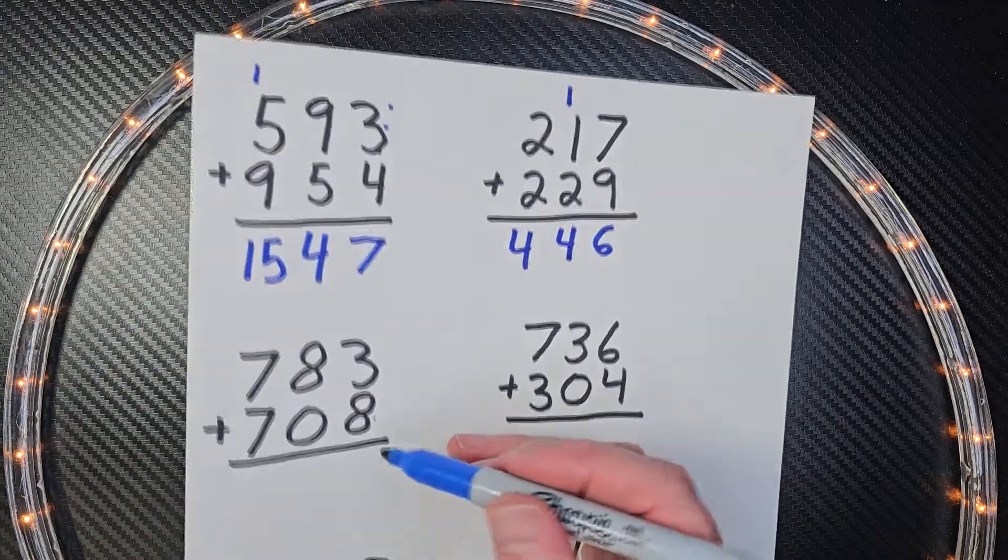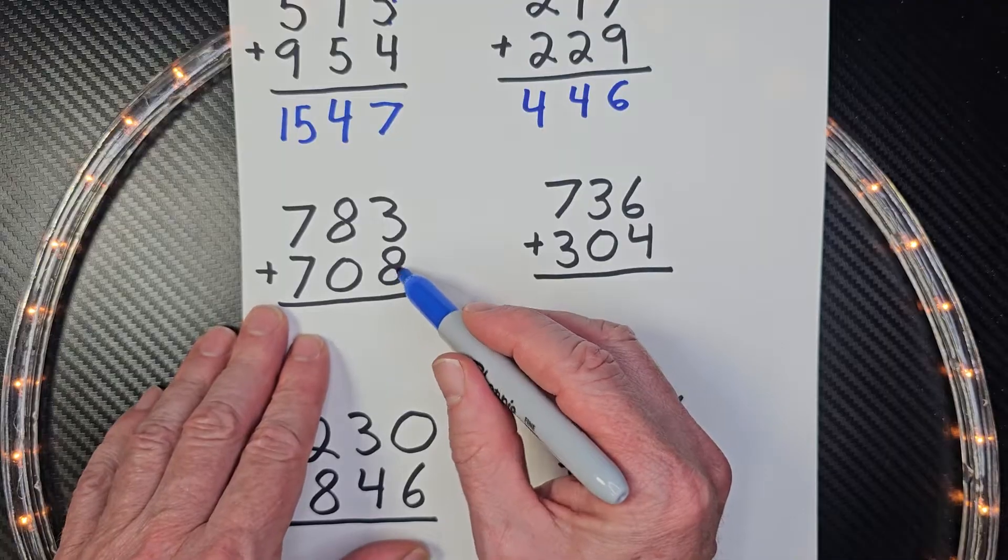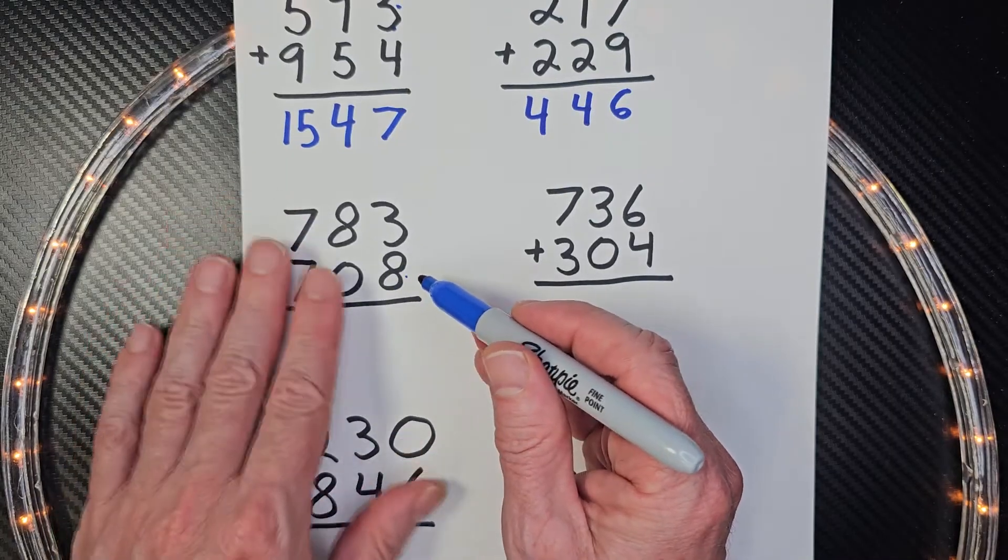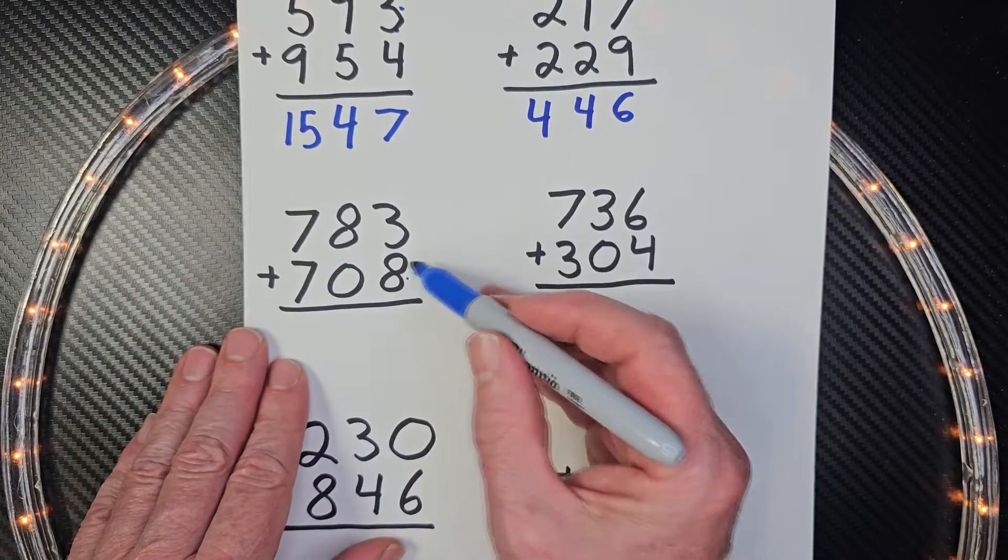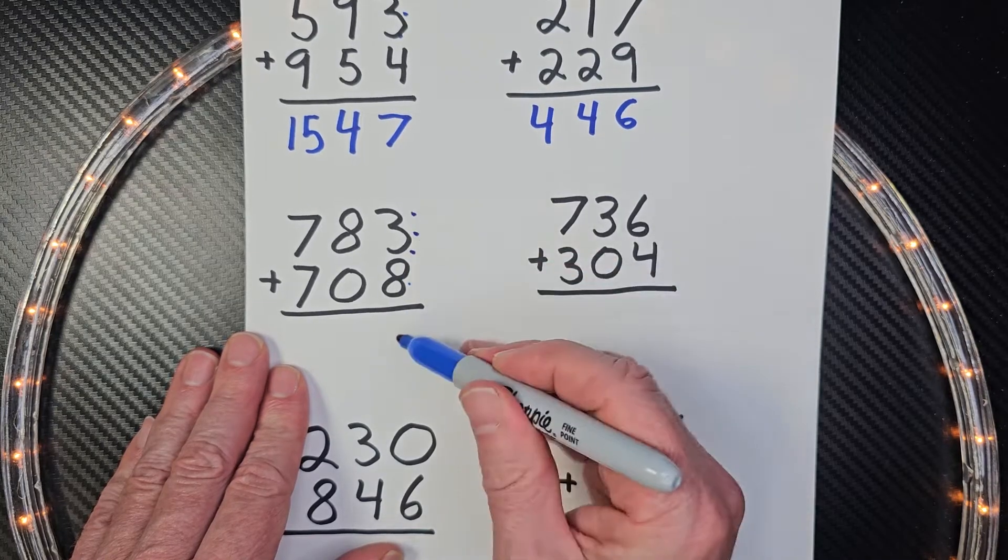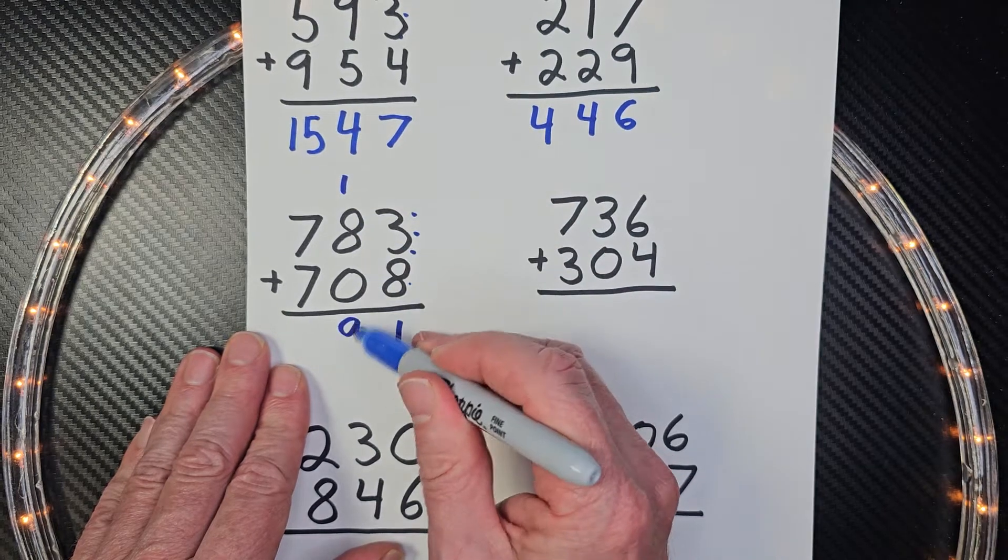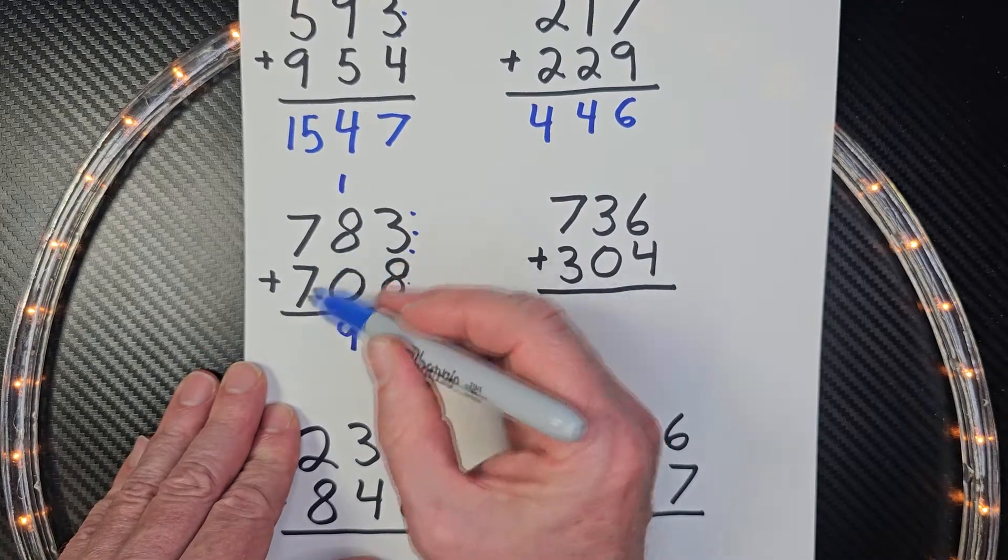I think I don't need to cover up this one. I think my fear is starting to go away. So we're going to go ahead and just, if you want to cover it up yourself, you can. I'm going to go ahead and just add the one. So it's eight, nine, ten, eleven. Carry the one. Eight plus one is nine, and then seven plus seven, fourteen.